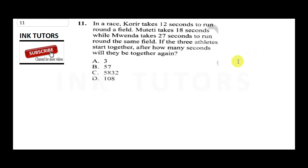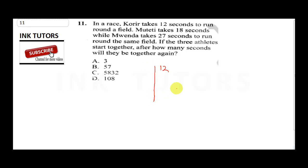Question 11 says: in a race, Corral takes 12 seconds to run around the field, Wycliffe takes 18 seconds, and Mwenda takes 27 seconds to run around the same field. If the three athletes start together, after how many seconds will they be together again? To solve this, we find the LCM of 12, 18, and 27.